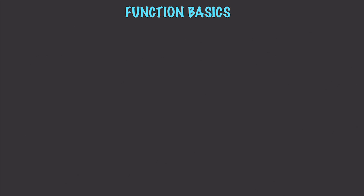Basically, a function is just an expression that provides exactly one output value for each input value. There's some slang we need to know. For example, if you have a point, you're going to have something called the abscissa, and this is the x value of a point — say, the point (1, 2). Then you're also going to have the ordinate, which represents the y value of a point.